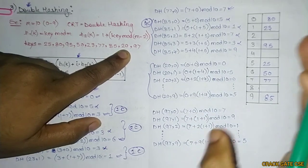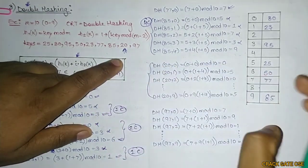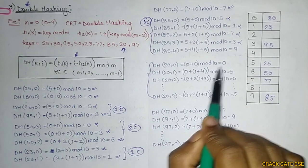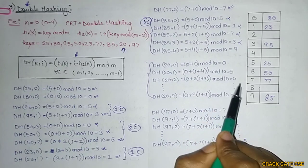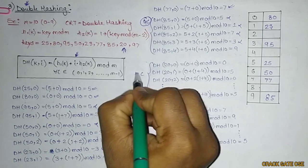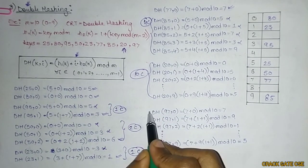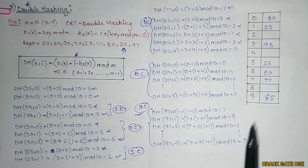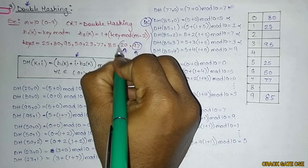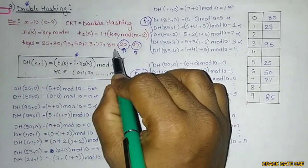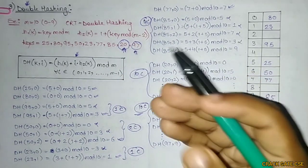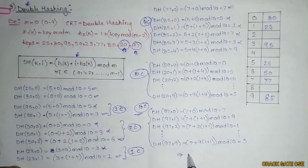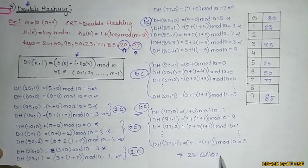For key 20, we get 10 collisions because 20 cannot make it into the hash table — no empty slot is found. Values keep repeating: 0, 5, 0, 5, and so on. Similarly, key 97 also cannot be stored, giving 10 collisions. So if asked which keys cannot be stored, the answer is 20 and 97. Total collisions: 0+0+1+2+1+0+4+10+10 = 28 collisions.